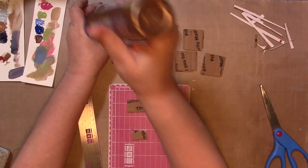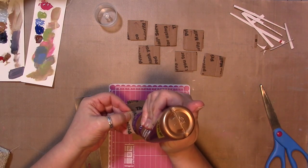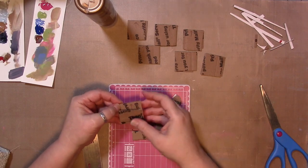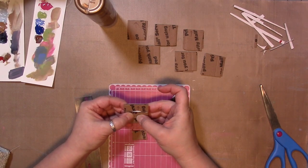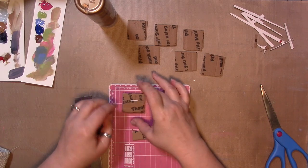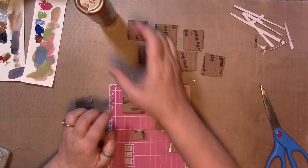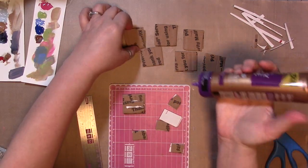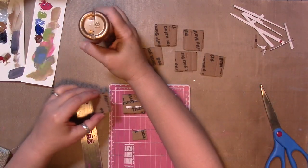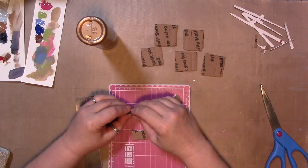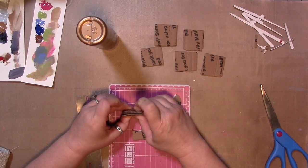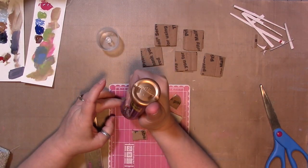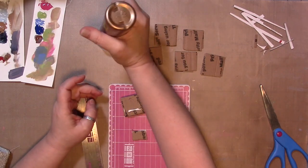We're going to sandwich one of these littler pieces up towards the non-straight edge of the bigger piece like that. Then we're going to put some more glue, then we'll put another one and put it on the table so all those edges line up.